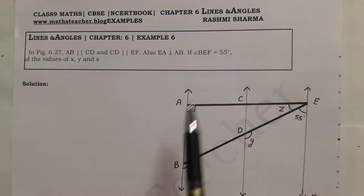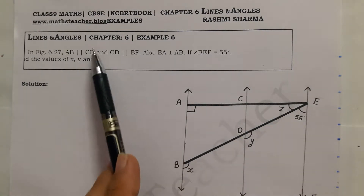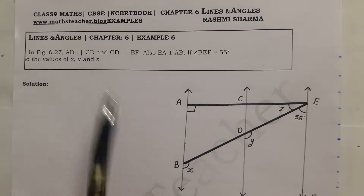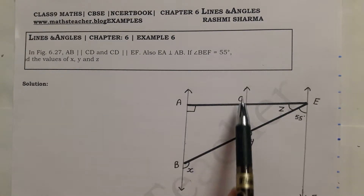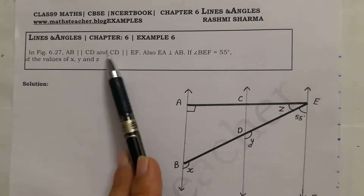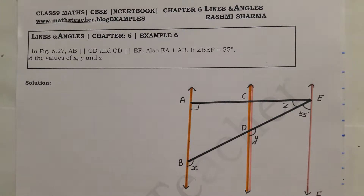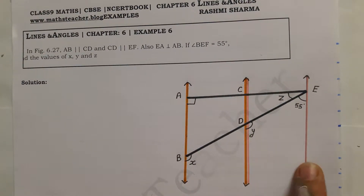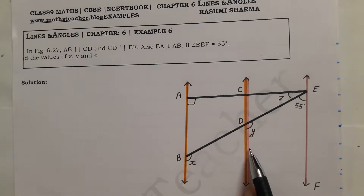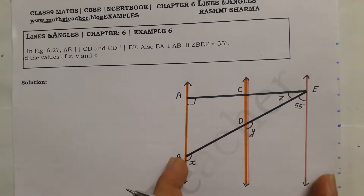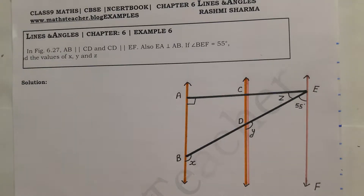In Figure 6.27, this figure is given in the question. AB is parallel to CD, and CD is parallel to EF. I draw an orange line for AB parallel CD, and a pink line for CD parallel EF. This means these lines are parallel. Our theorem is that if one line is parallel...